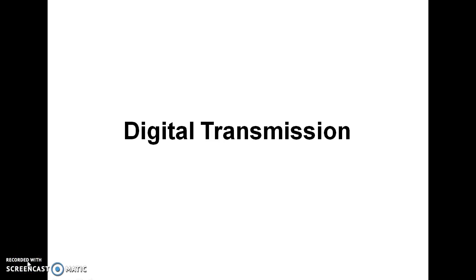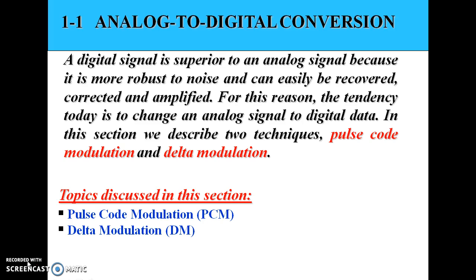Hello everyone, I am Ankita Grawal and in this video I will be explaining digital transmission of signals. There are various advantages of a digital signal, like robustness to noise and ease of recovery or regeneration. For this purpose, we have to convert an analog signal to digital — that is, A-to-D conversion. Various methods exist for this, like pulse code modulation (PCM), delta modulation, and many more techniques.